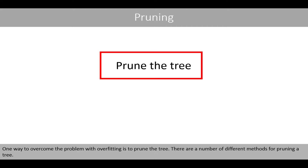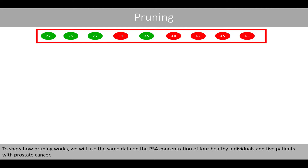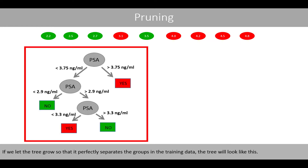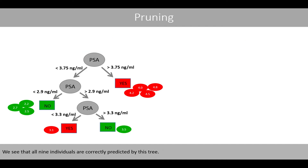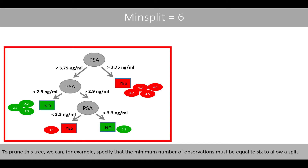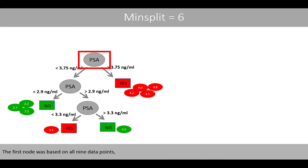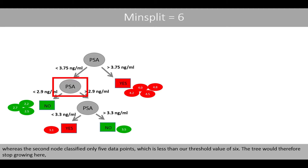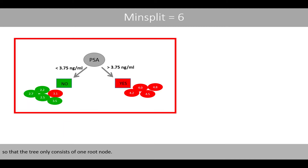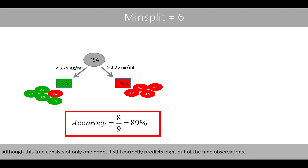One way to overcome the problem with overfitting is to prune the tree. There are a number of different methods for pruning a tree. To show how pruning works, we will use the same data on the PSA concentration of four healthy individuals and five patients with prostate cancer. If you let the tree grow so that it perfectly separates the groups in the training data, all nine individuals are correctly predicted. To prune this tree, we can specify that the minimum number of observations must be equal to six to allow a split. The first node was based on all nine data points, whereas the second node classified only five data points, which is less than our threshold value of six. The tree would therefore stop growing, consisting of only one root node.